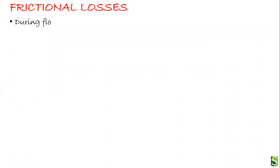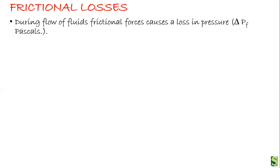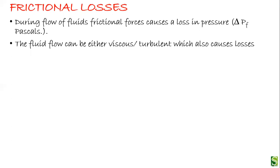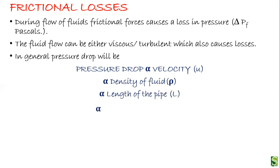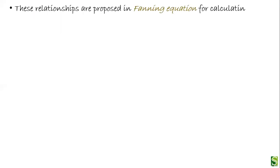During the flow of fluids, frictional forces cause a loss in pressure, expressed in Pascals. Fluid flow can be either viscous or turbulent, both of which cause losses. In general, the pressure drop is directly proportional to velocity, density, and length of the pipe, and inversely proportional to the diameter of the pipe. These relationships are proposed in the Fanning equation.